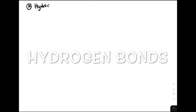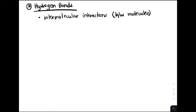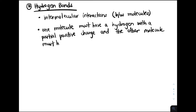Let's talk about the third type of bond: hydrogen bonds, which are really special. The first key idea is that hydrogen bonds are intermolecular interactions, so they occur between molecules. The previous two types of bonds — covalent and ionic — tend to occur between atoms. Hydrogen bonds occur when one molecule has a hydrogen with a partial positive charge and the other molecule has an electronegative atom with a partial negative charge.